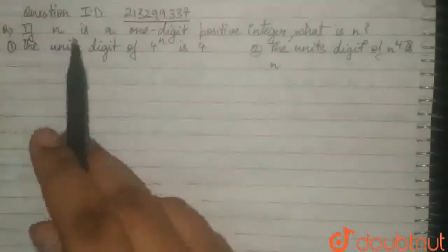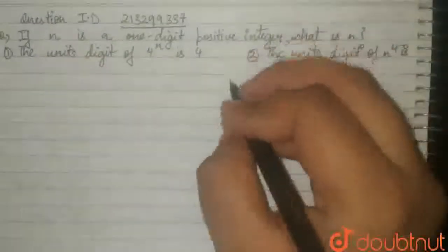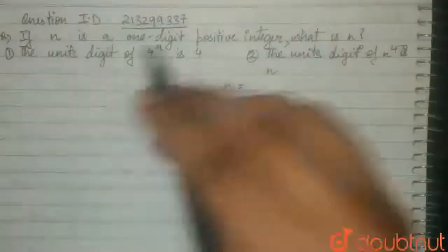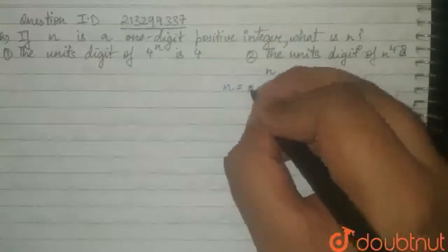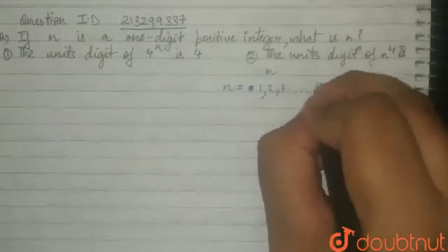The question is, if n is a one-digit positive integer, what is n? n is a one-digit positive integer. Positive integer does not include 0, up until 9.